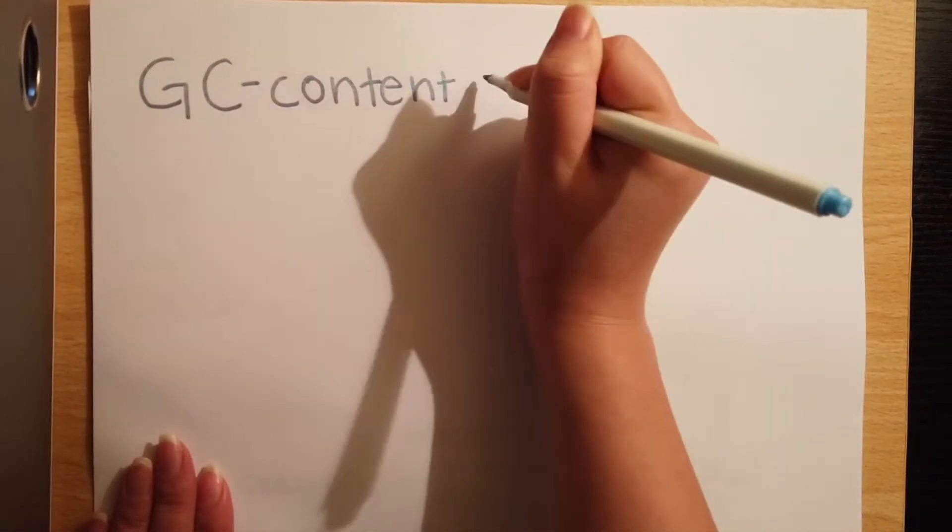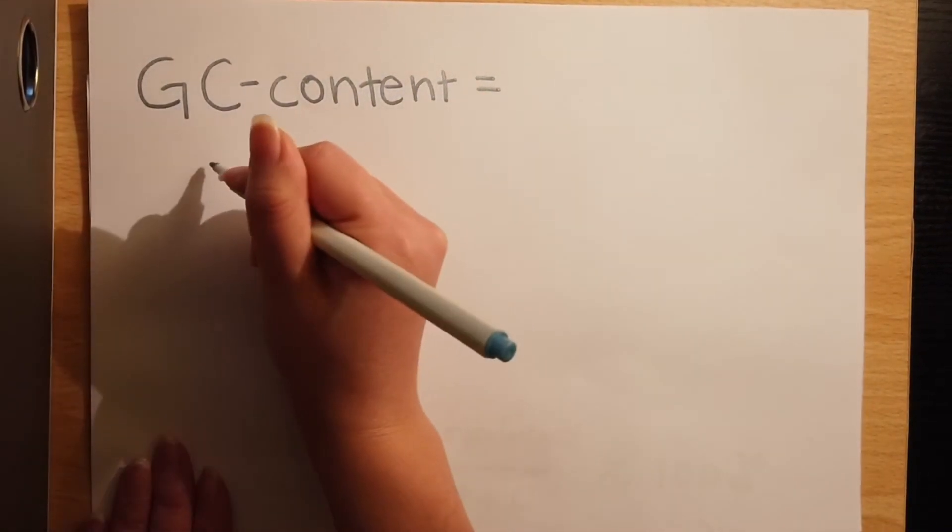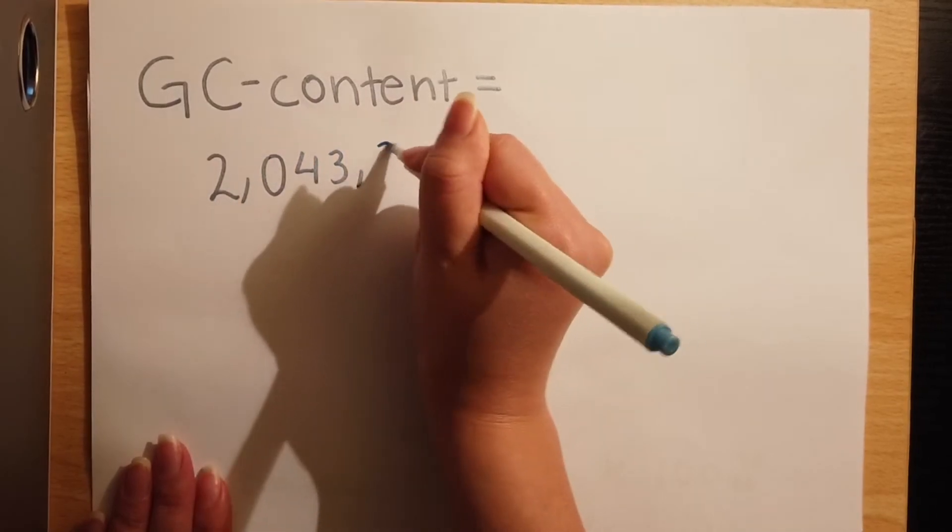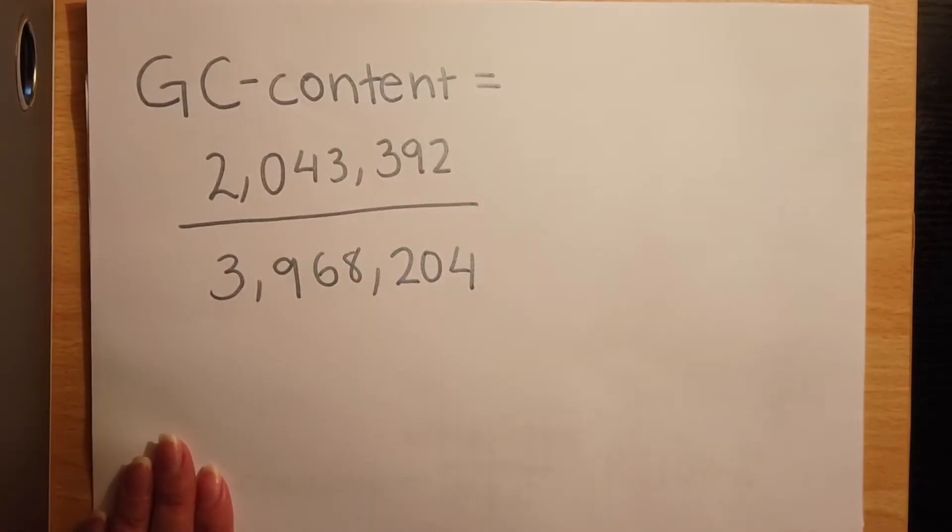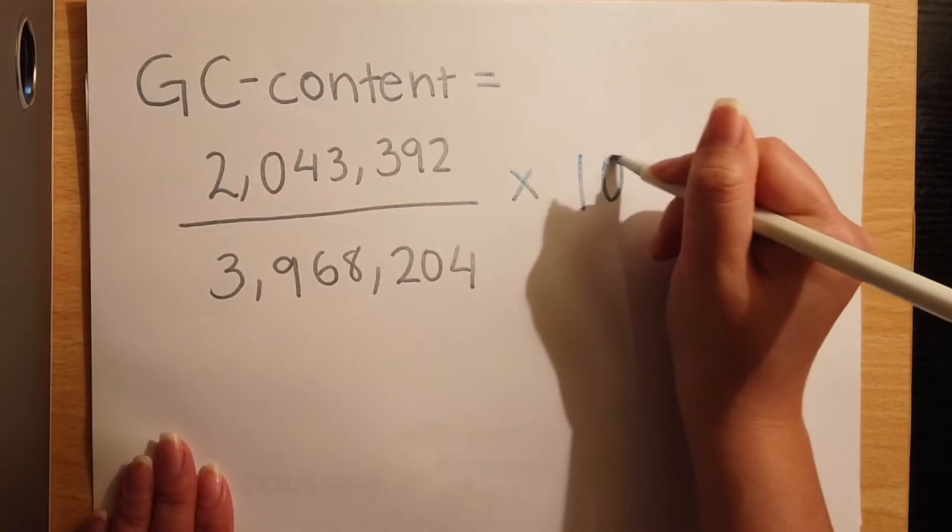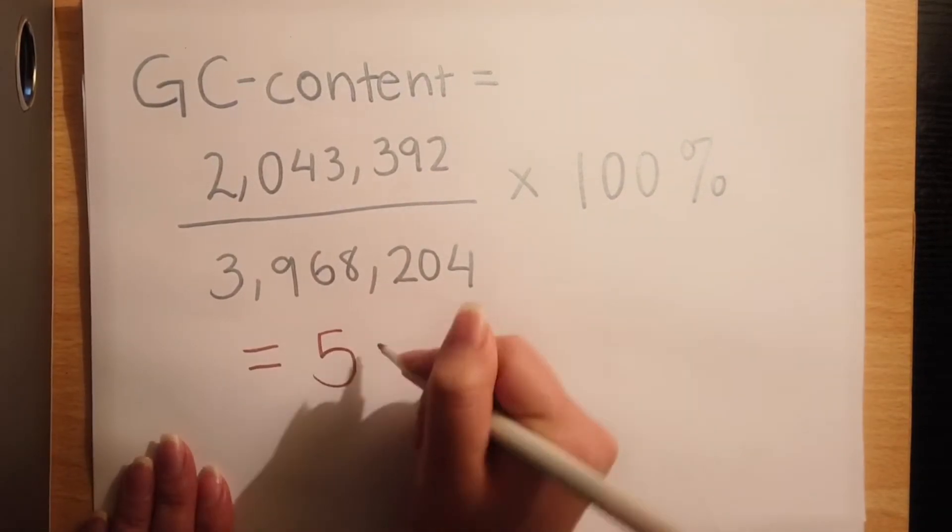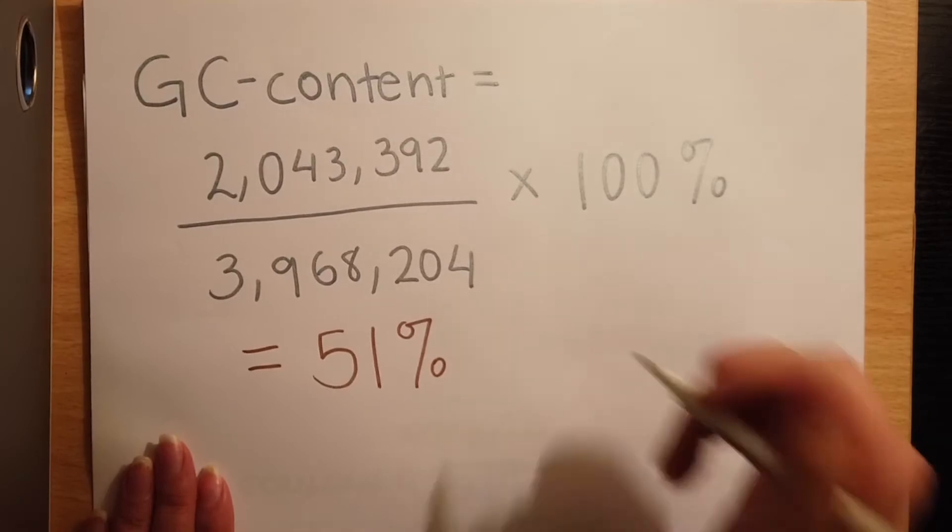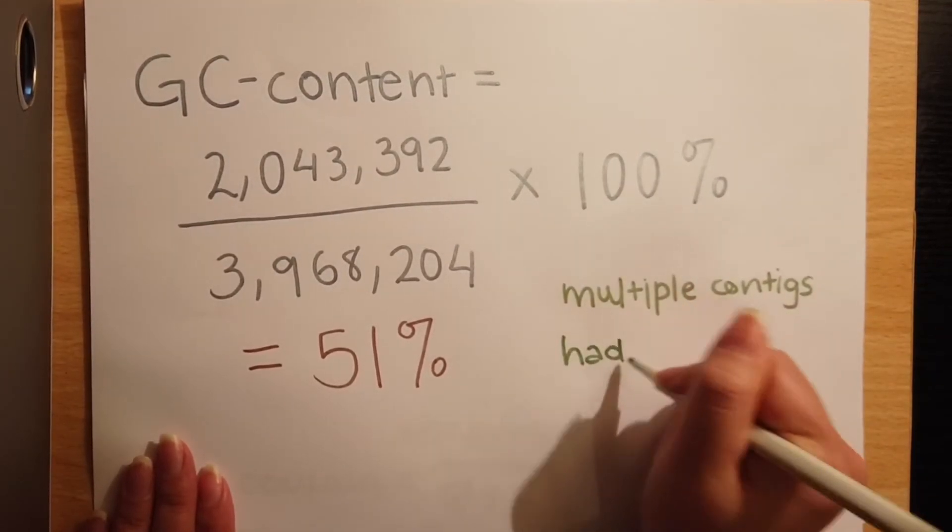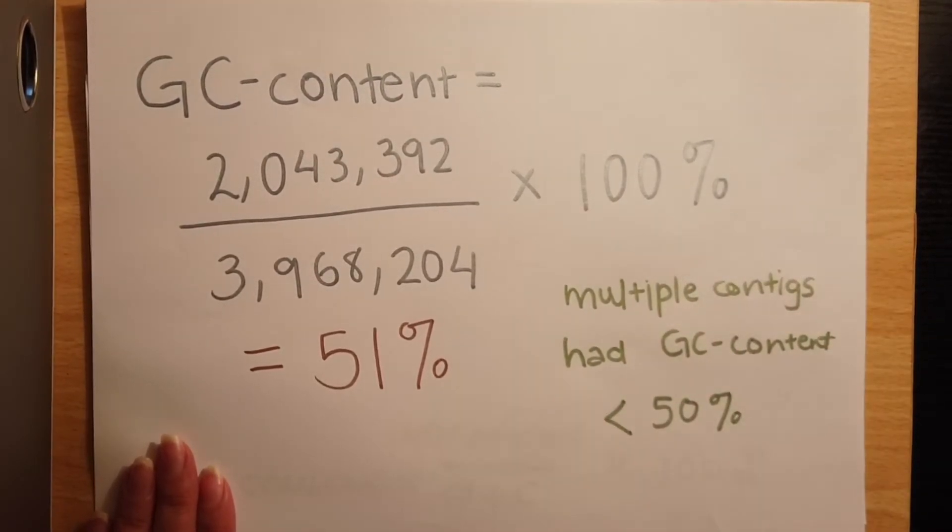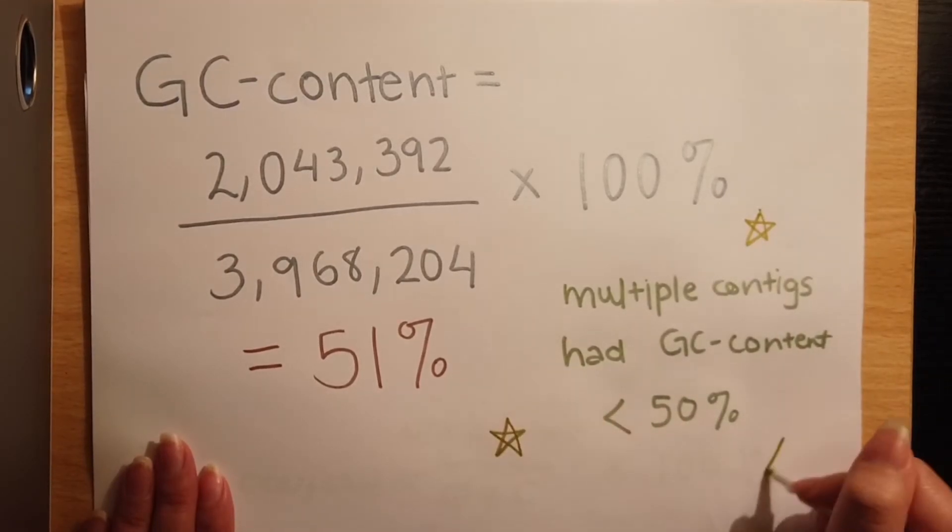The results found that the total number of guanine and cytosine in the entire genome amounted to around 2 million nucleotides and that there were around 3.9 million nucleotides in the entire genome. Therefore, the overall GC content was calculated at 51%. It must be emphasized that multiple contigs had a GC content lower than 50%. Remember that because it's important.